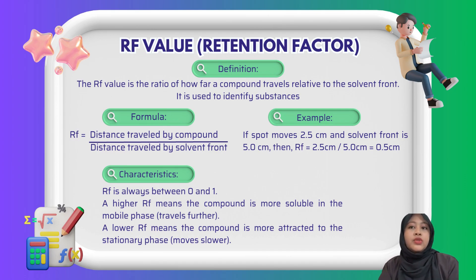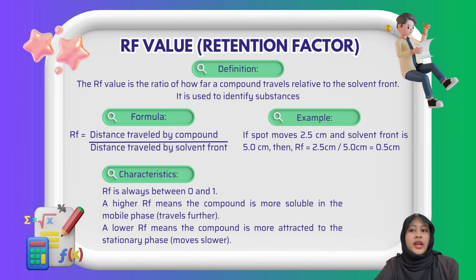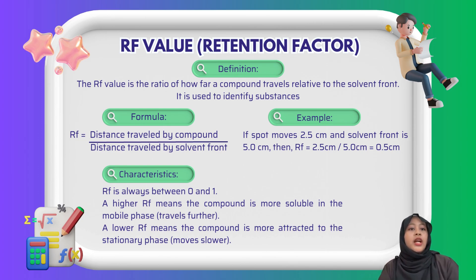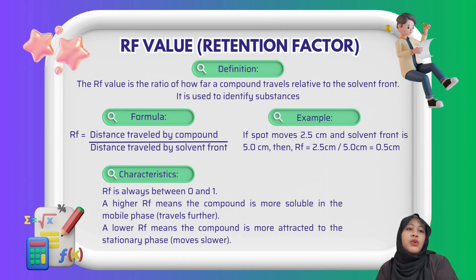For example, if a spot moves 2.5 cm and the solvent moves 5 cm, we divide 2.5 by 5 and get a retention factor of 0.5. The RF value is always between 0 and 1. If the RF is high, the compound is more soluble in the mobile phase and moves further. If it's low, the compound is more attracted to the stationary phase and moves more slowly.